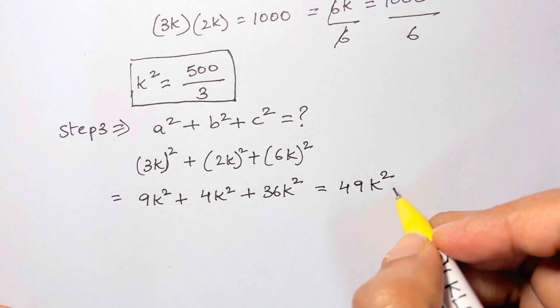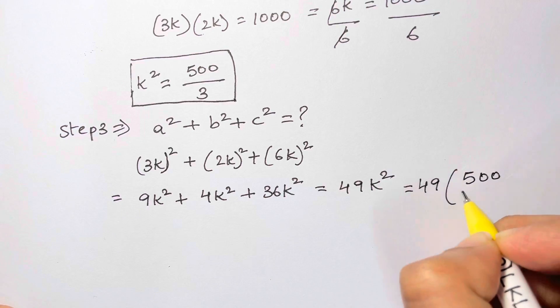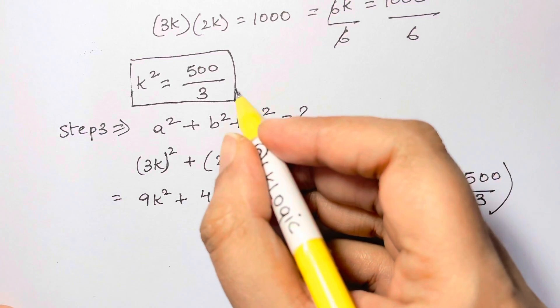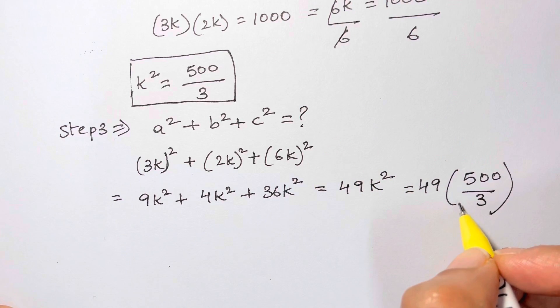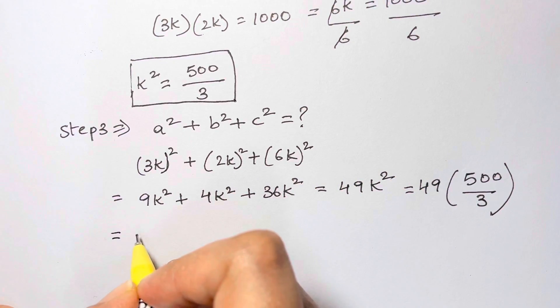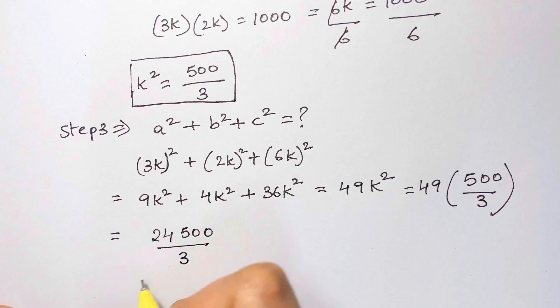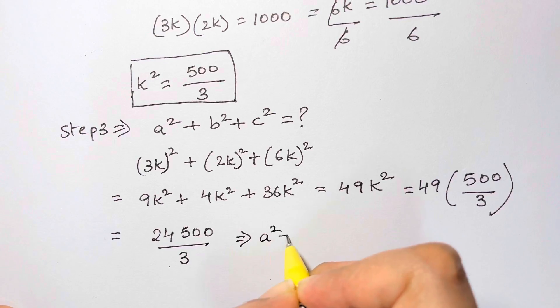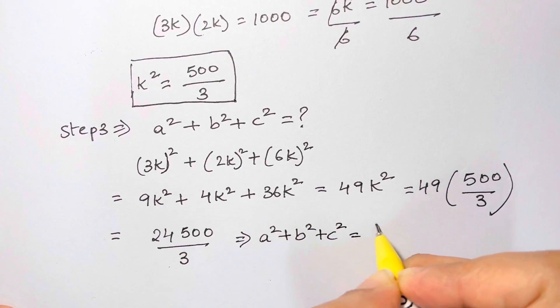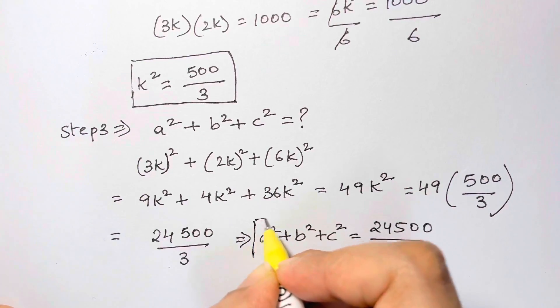And what is k²? k² is given to us from here, that's k². So I'm just substituting in place of k². So here we have 49 times 500 over 3. 49 times 500 is 24,500 over 3. That's the value of a² + b² + c². That's your answer.